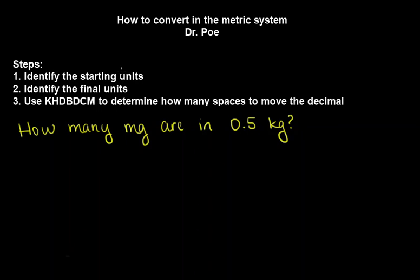So first, we're going to identify the starting units. Then we're going to identify the final units. And we're going to use this wonderful mnemonic, King Henry died by drinking chocolate milk, to determine how many spaces to move the decimal. Because the metric system is based on powers of 10, all we're doing is moving the decimal.